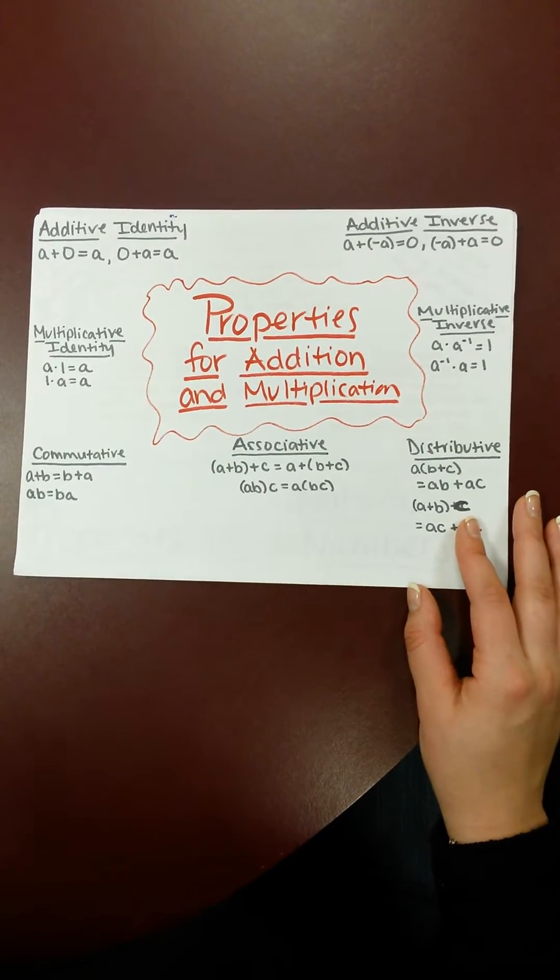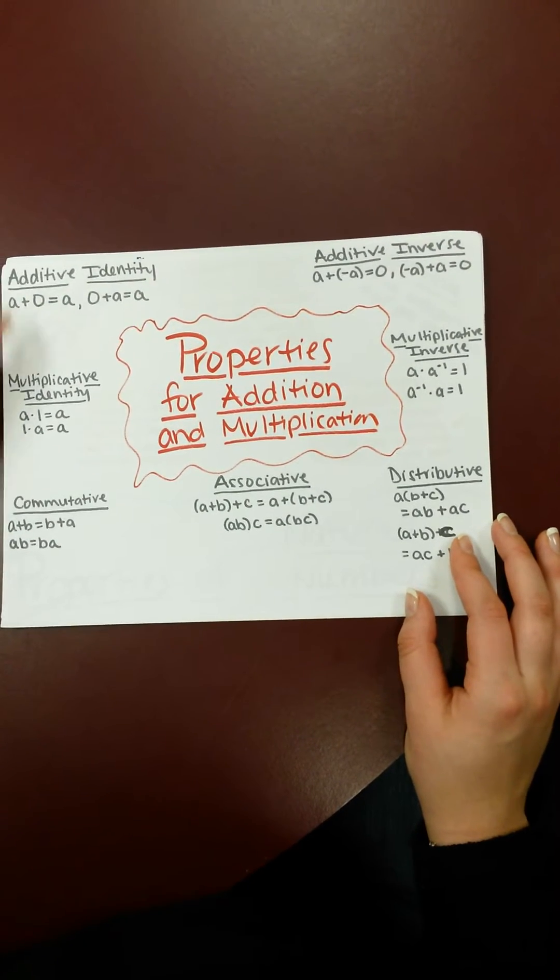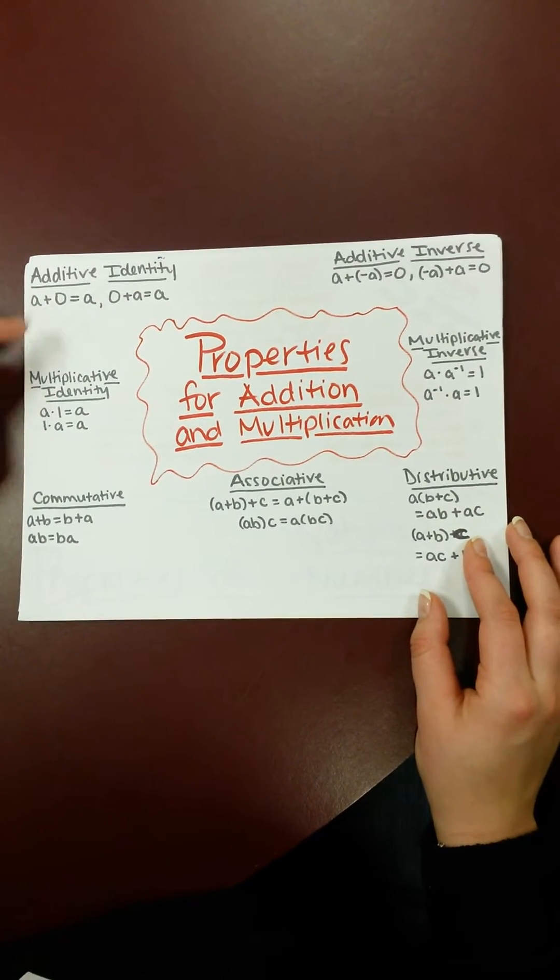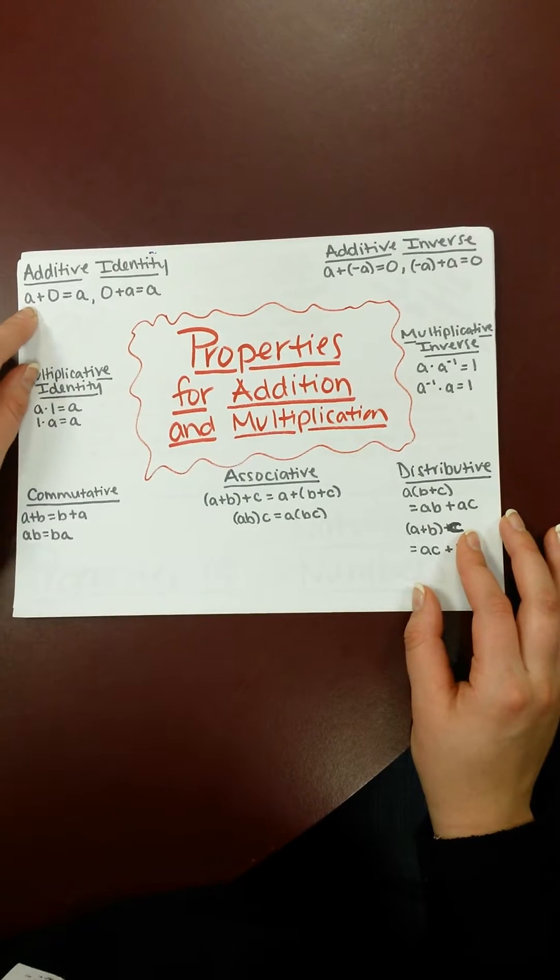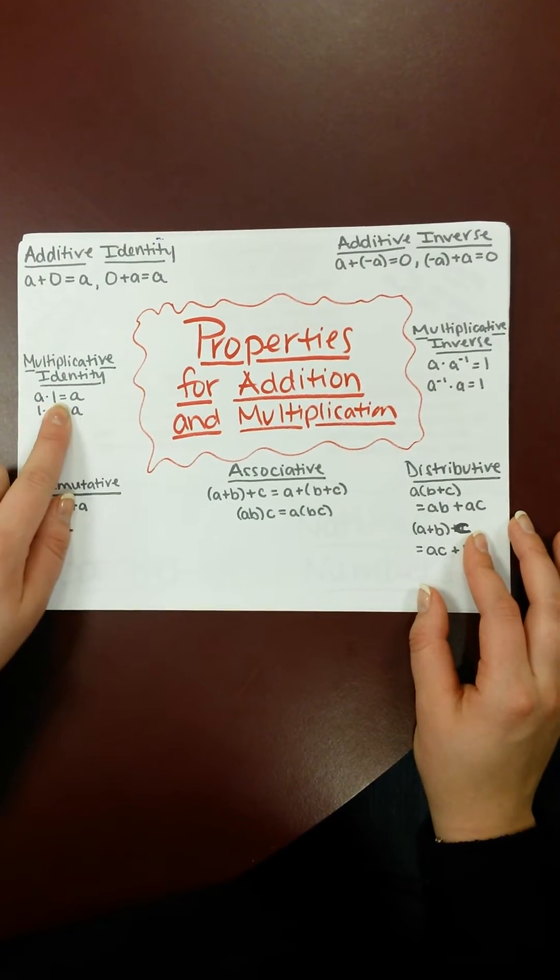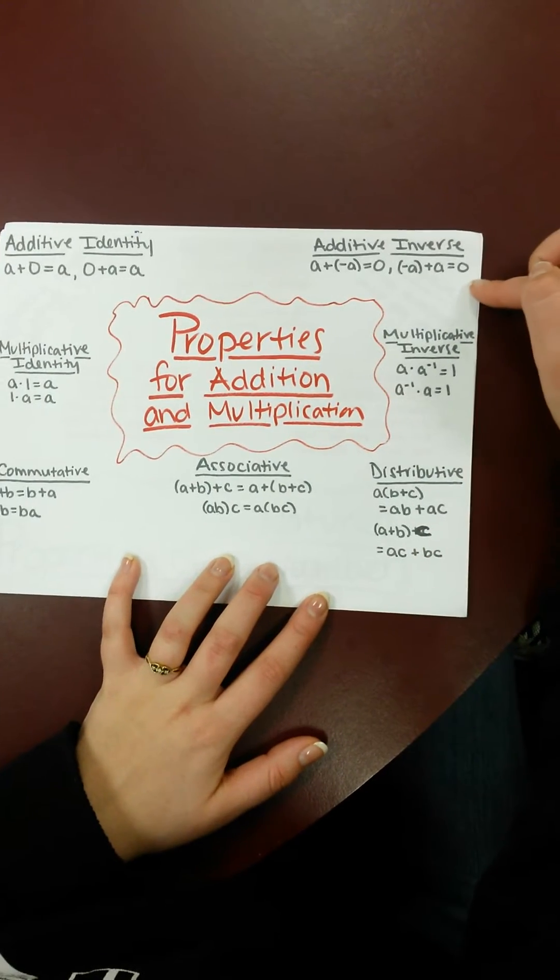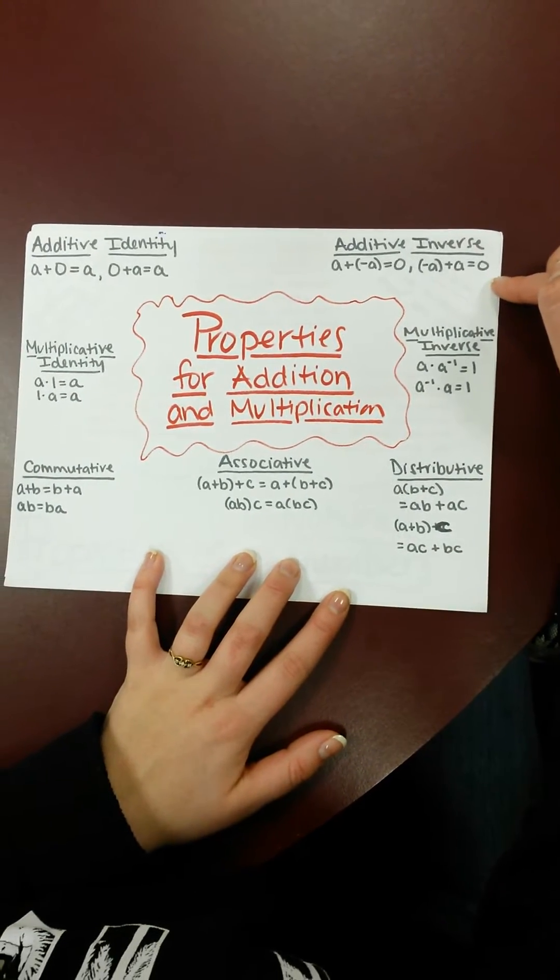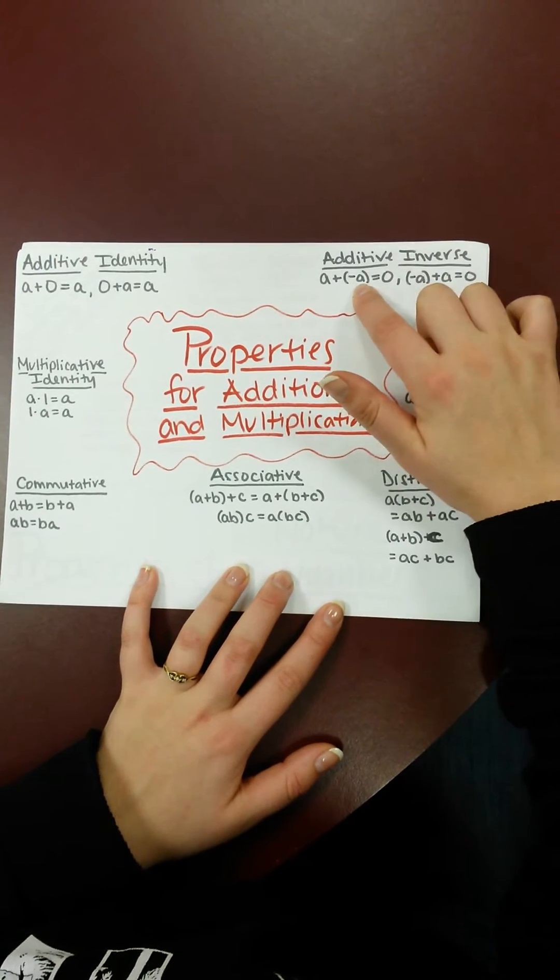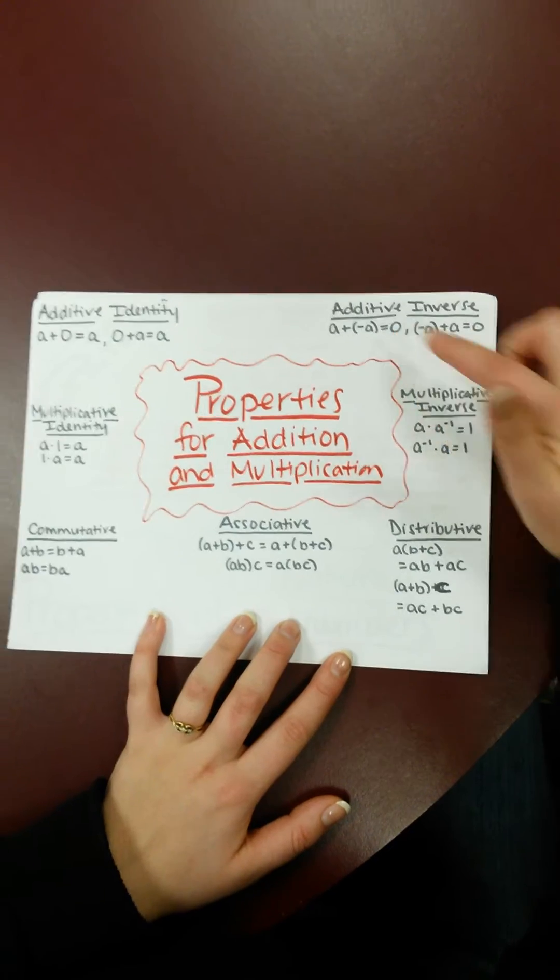So now we'll talk about properties for addition and multiplication. If we start with the identities of additive and multiplicative, it's basically saying a plus 0 for additive, or a times 1 will always give you a. And we talk about the inverses of additive and multiplicative, it's saying that a times its inverse, or a times the opposite of it, is equal to 0 or 1.